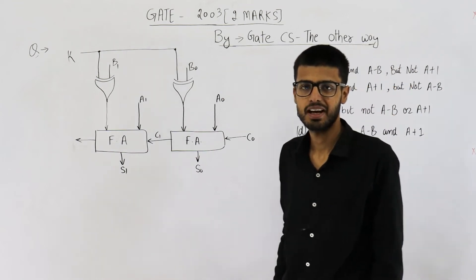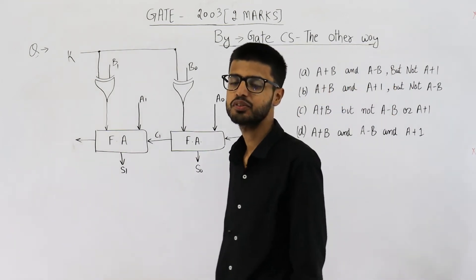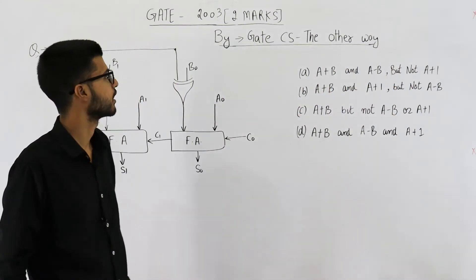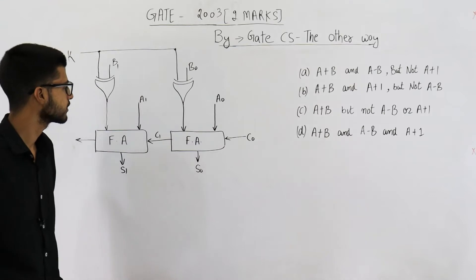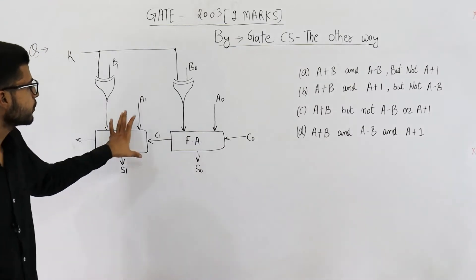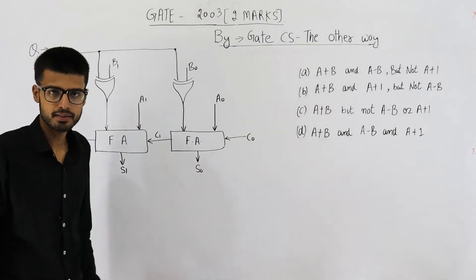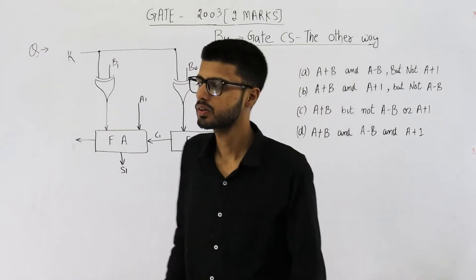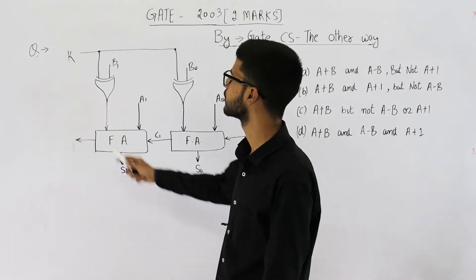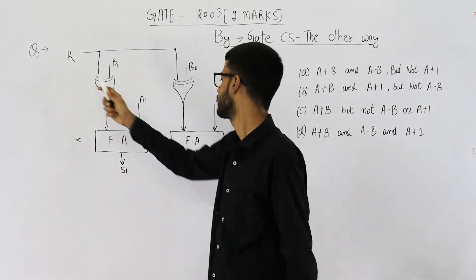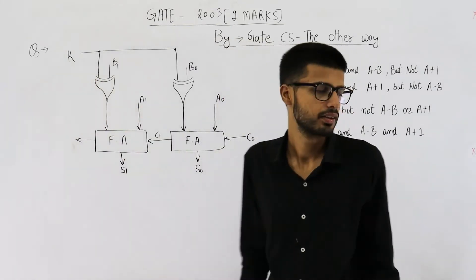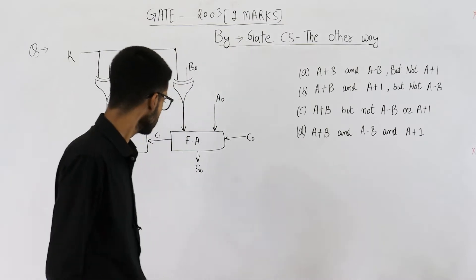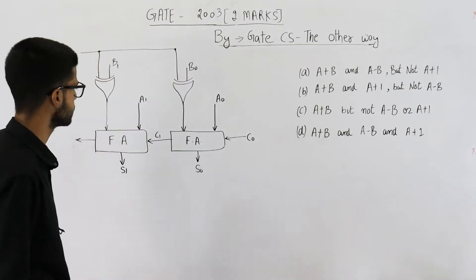Hello students, welcome back. This question is from the GATE 2003 exam. They are asking what operations can be performed on this ALU by changing the control signals k and c-naught. These are the four options — let us analyze this circuit.